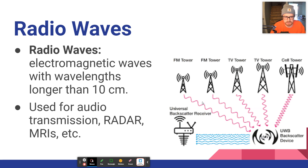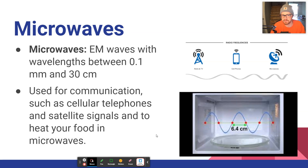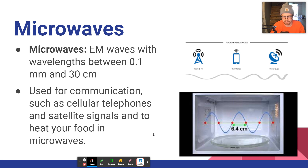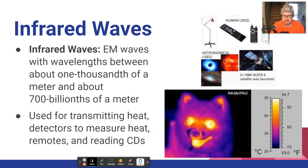Microwaves heat up our food by emitting waves that heat the water within the food. This is why your bread gets soggy in the microwave — it moves the water around rather than removing it, making food feel soggier. Microwaves are also used for communication such as cellular telephone and satellite signals.